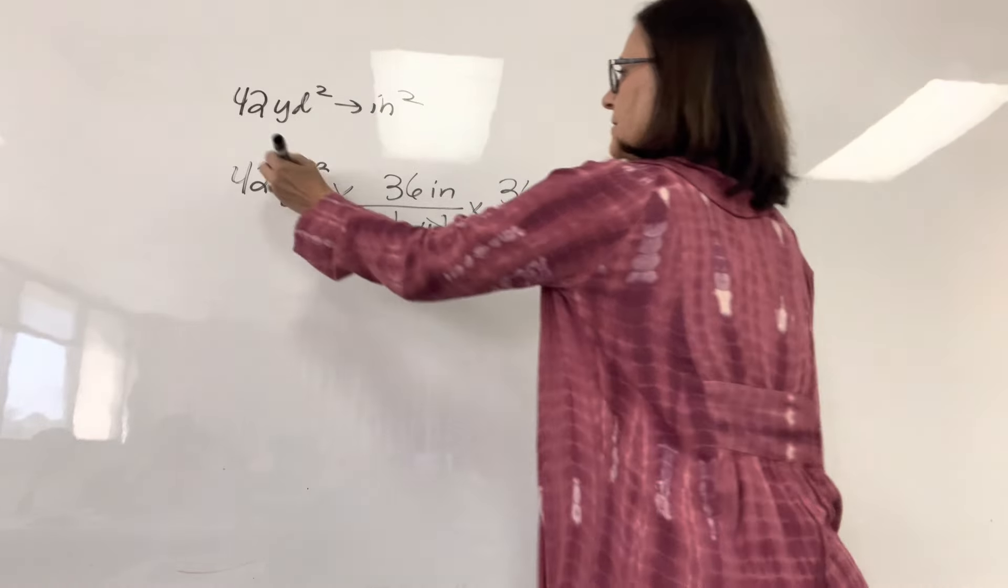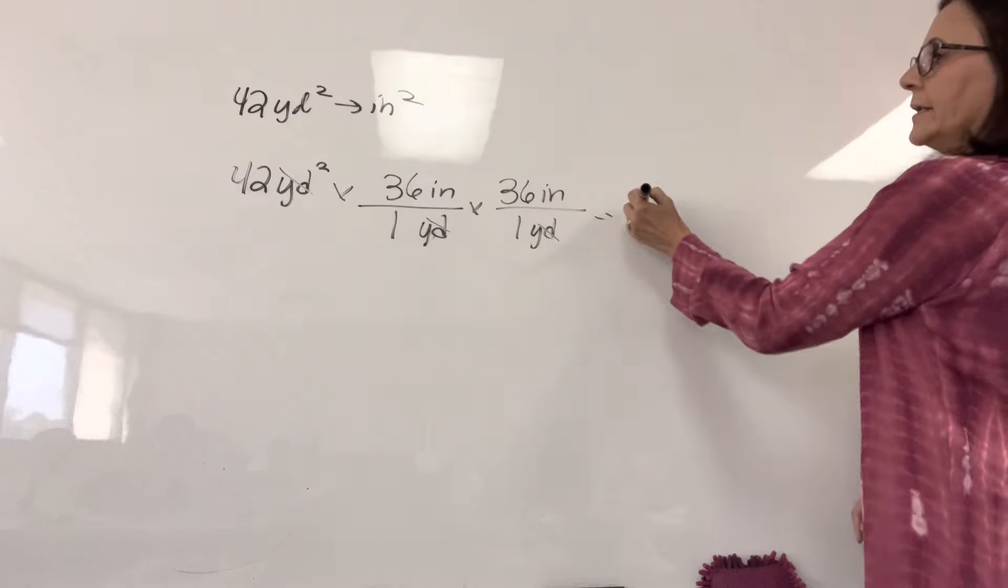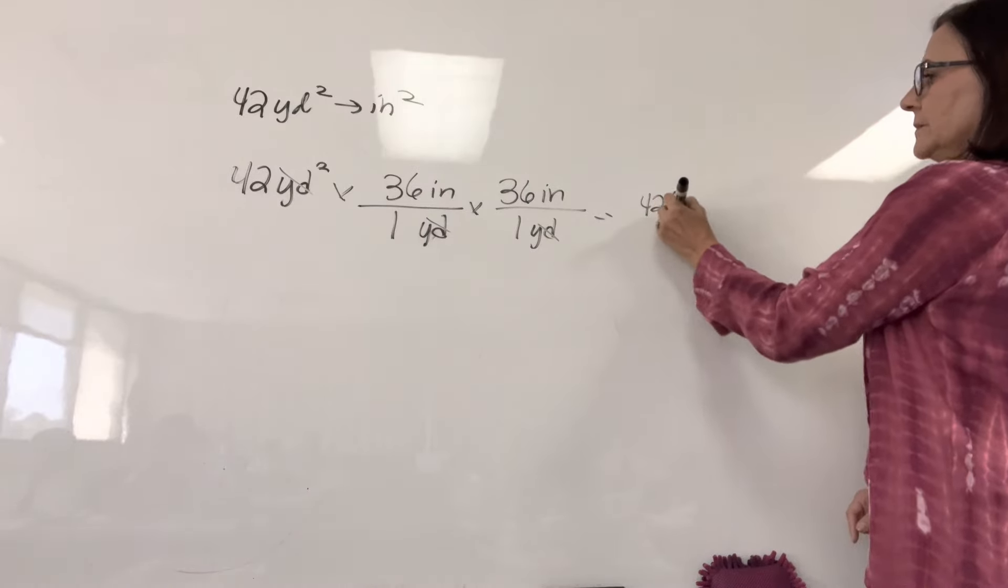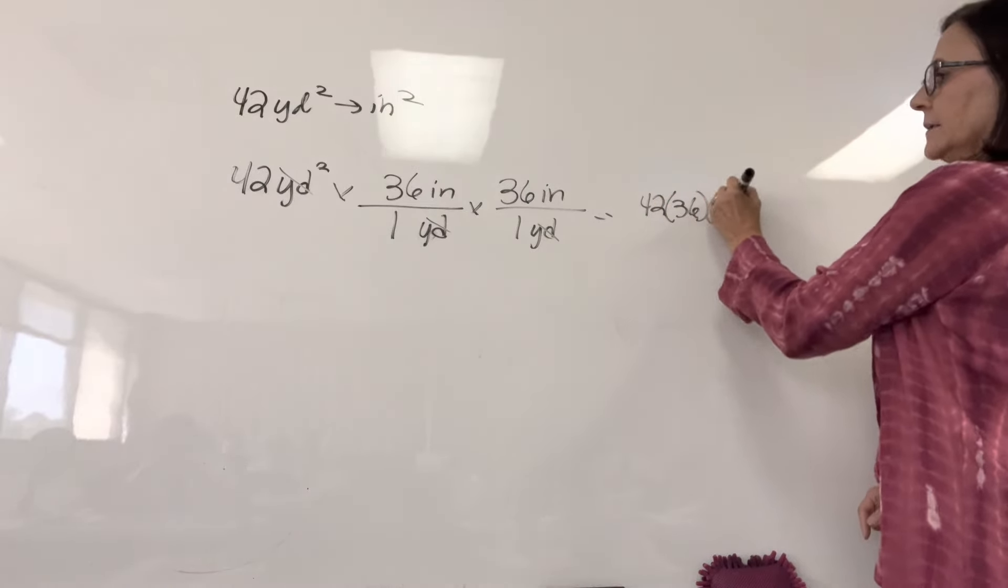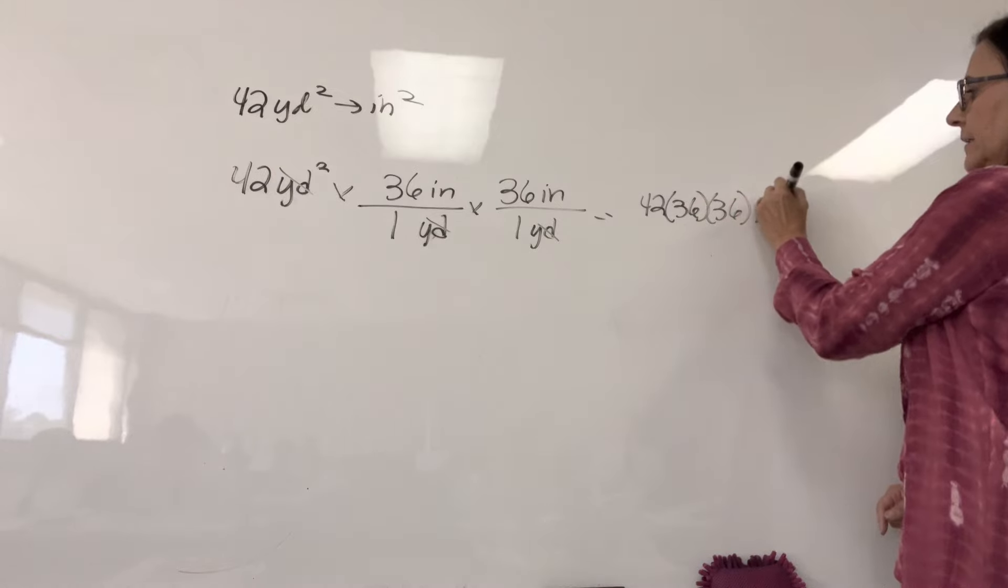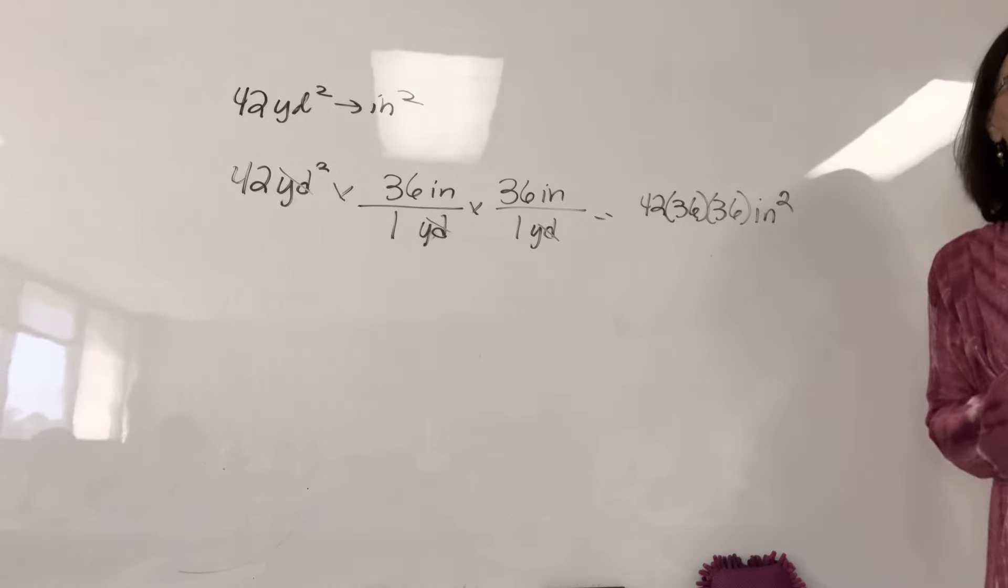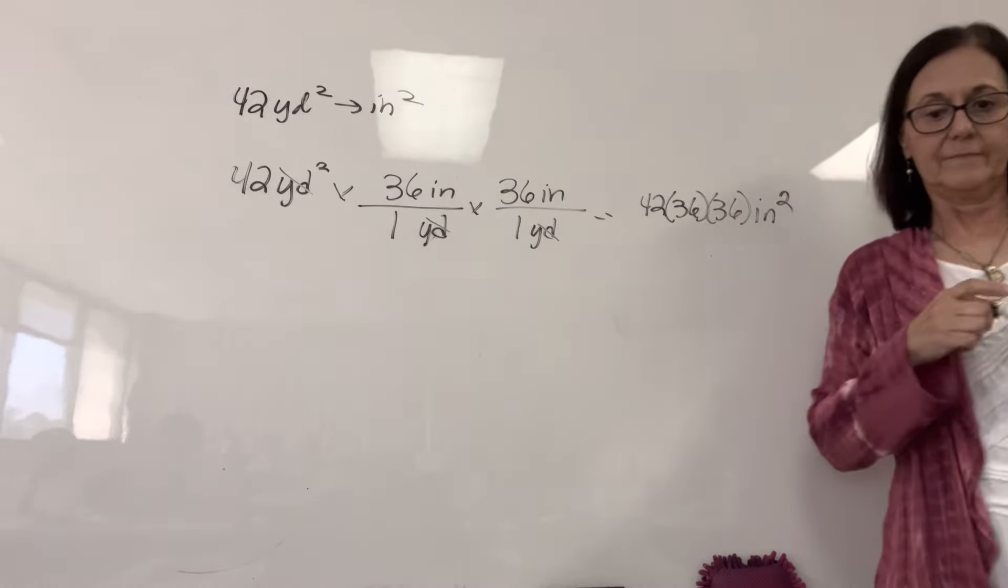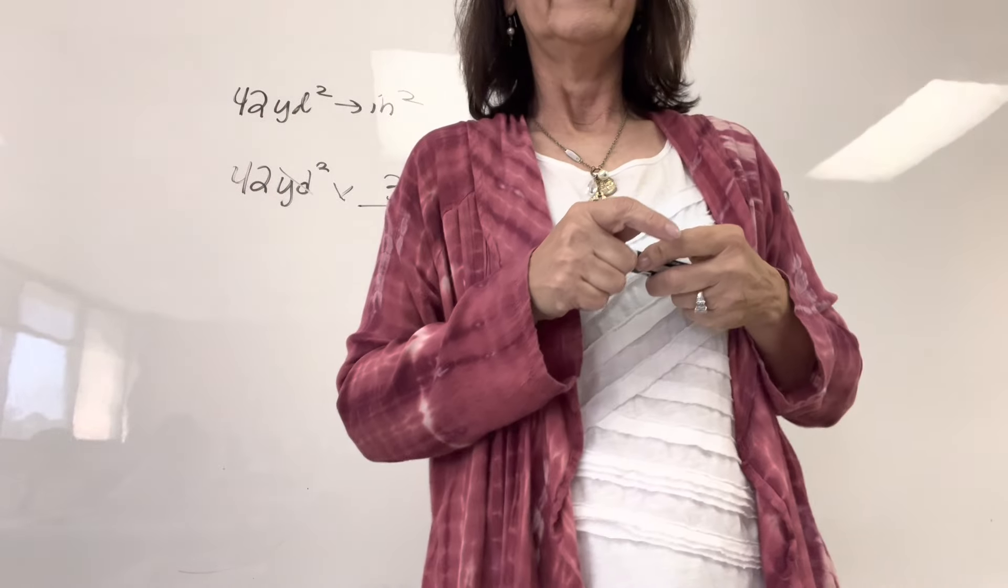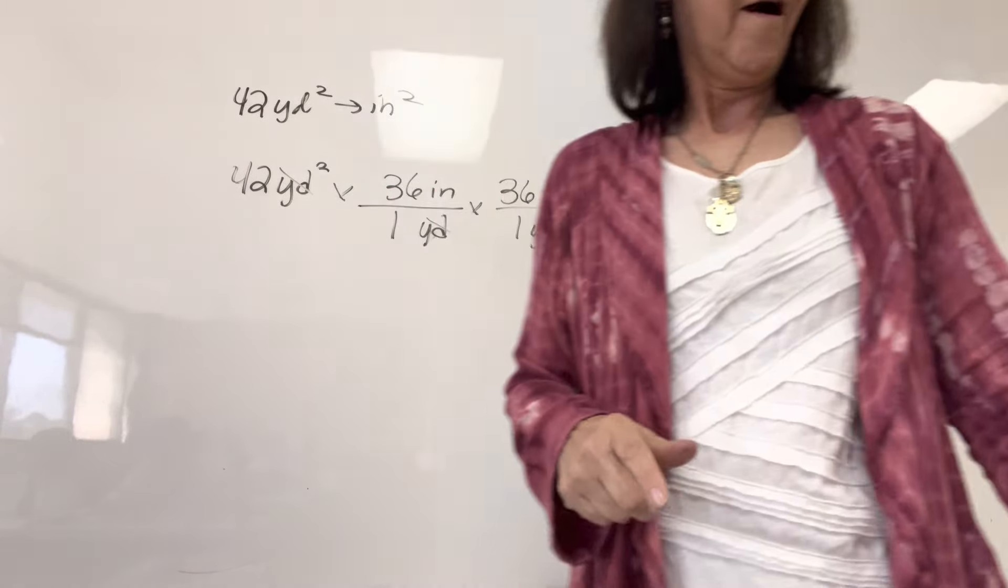So my yards cancel out. So I end up with 42 times 36 times 36 inches squared. Got it so far.